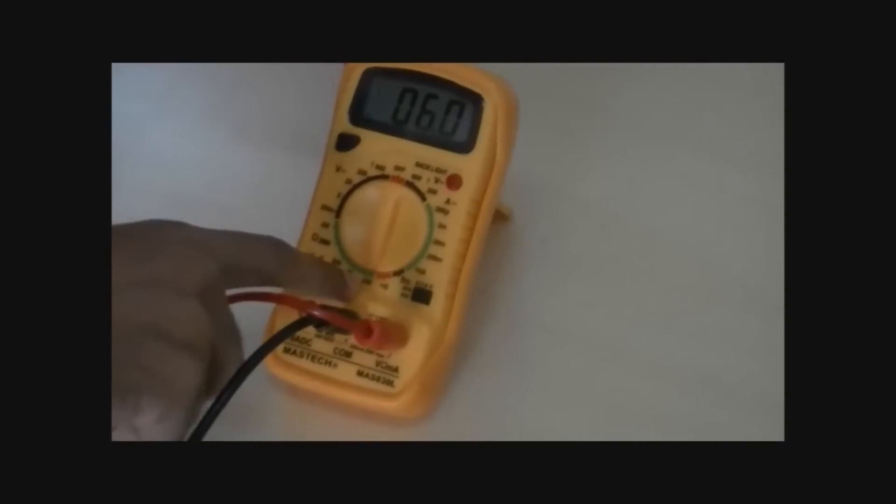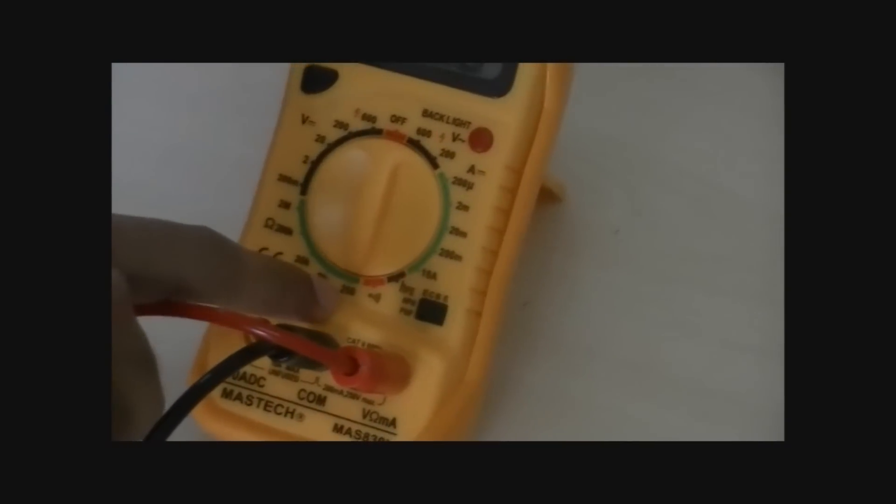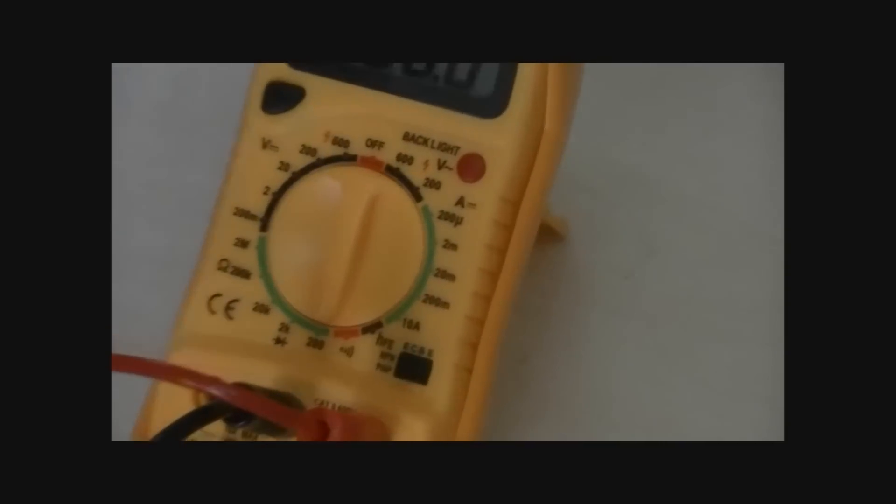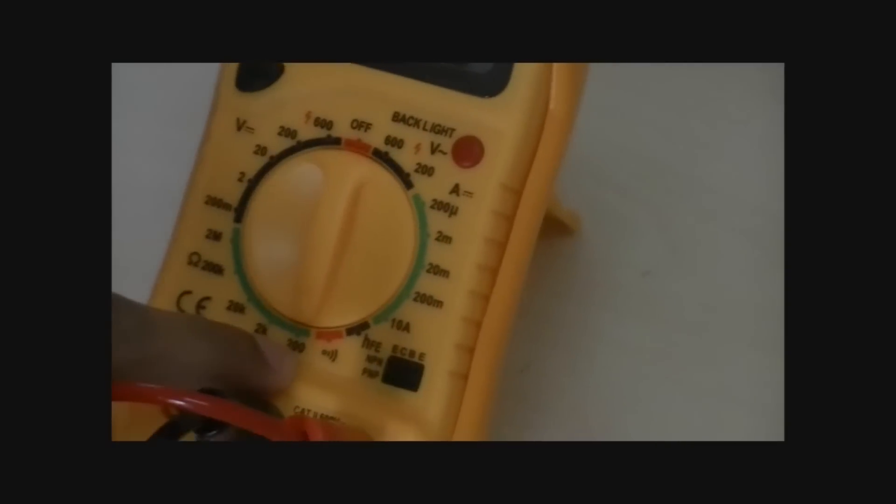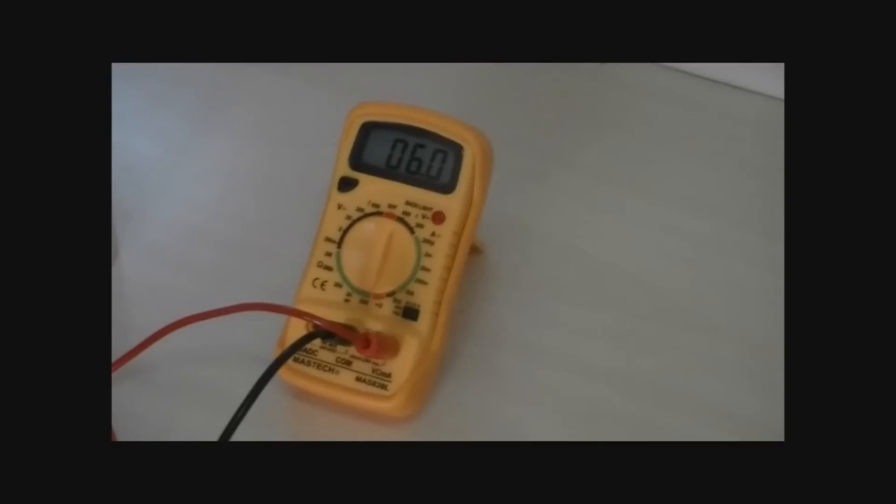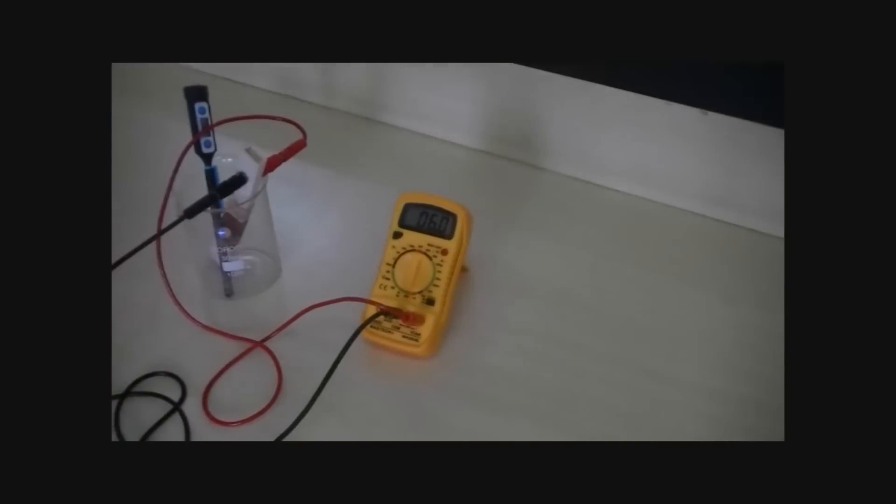The reading shown, the value shown here, tells us the maximum reading the multimeter can measure. Keep it at 200 ohms, which is the maximum reading that the multimeter can measure when the knob is kept at that position.